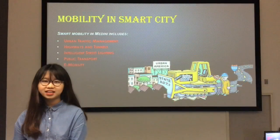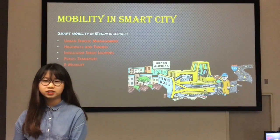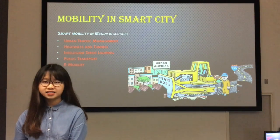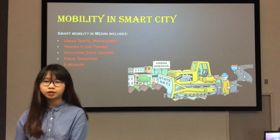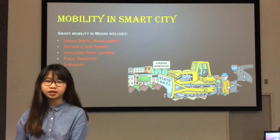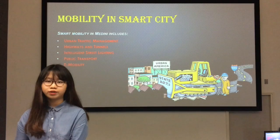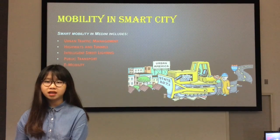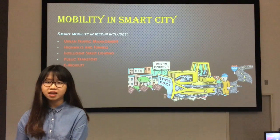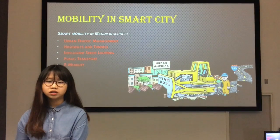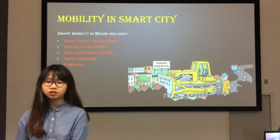Smart mobility in Medini consists of five fields. First is urban traffic management. As the traffic situation changes from hour to hour, the urban traffic control application adapts its strategy in real time to the actual situation, even in unpredictable traffic conditions. The system constantly monitors and forecasts traffic status and optimizes signal control according to traffic flow efficiency, environmental conditions, and other strategy decisions defined by road authorities.